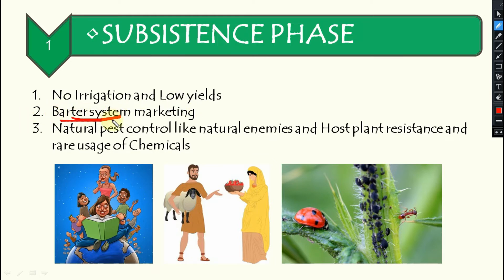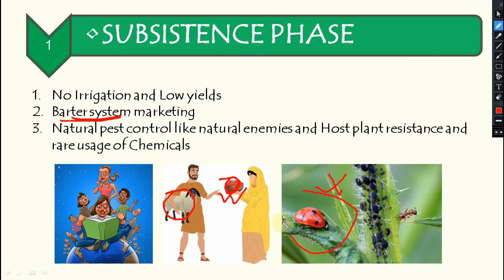A barter system was in place — farmers would give one commodity and receive another product in return. Management mainly relied on the natural ecosystem: climate would reduce pest populations, and predators present in the field would feed on pests. Host plant resistance was also utilized. No chemical pesticides were used; whatever botanicals were used were natural, like neem leaves.